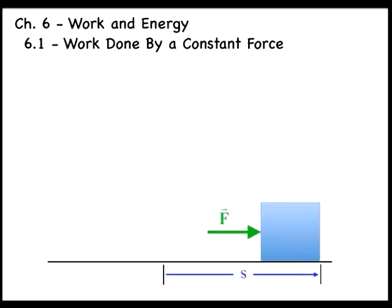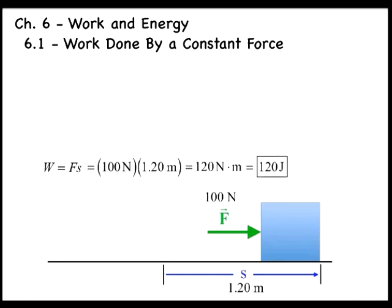For instance, assume that a force of F equals 100 newtons acts on an object that slides a distance of 1.20 meters in the same direction as the force. The work the force does on the object is W equals FS equals 100 newtons times 1.20 meters, which equals 120 newton meters. The unit newton meter is called a joule and given the symbol J, so the work done in this case is 120 joules.